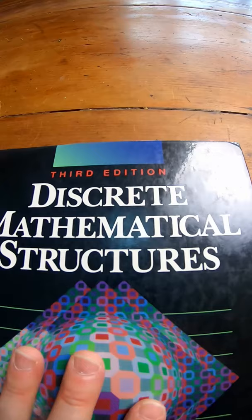Discrete Mathematical Structures by Coleman, Busby, and Ross. This is a really good discrete math book for beginners.